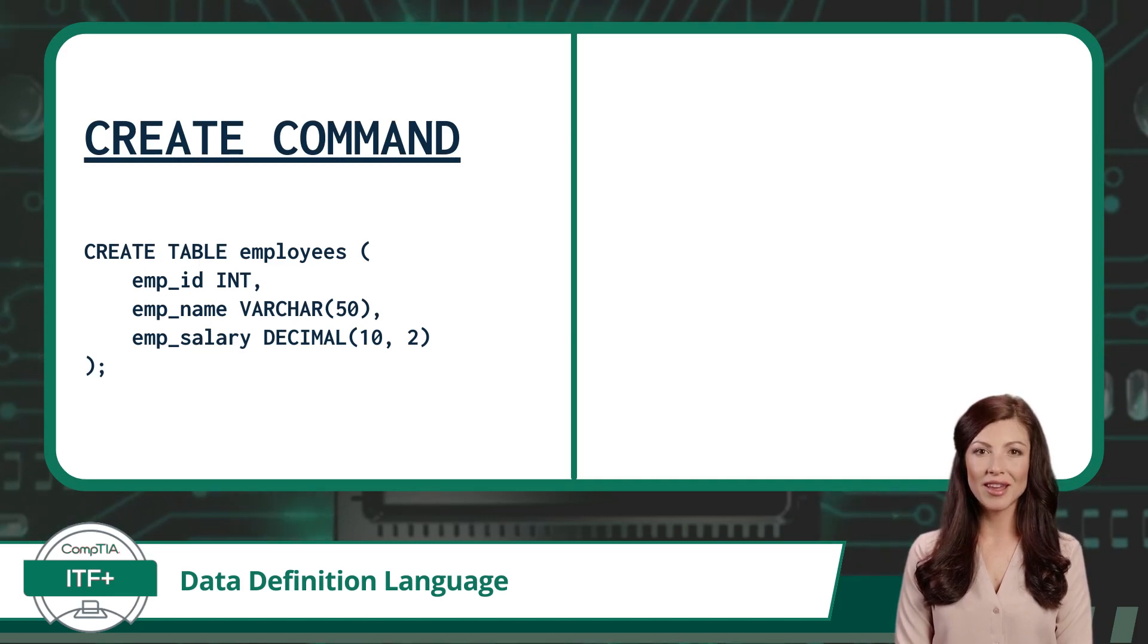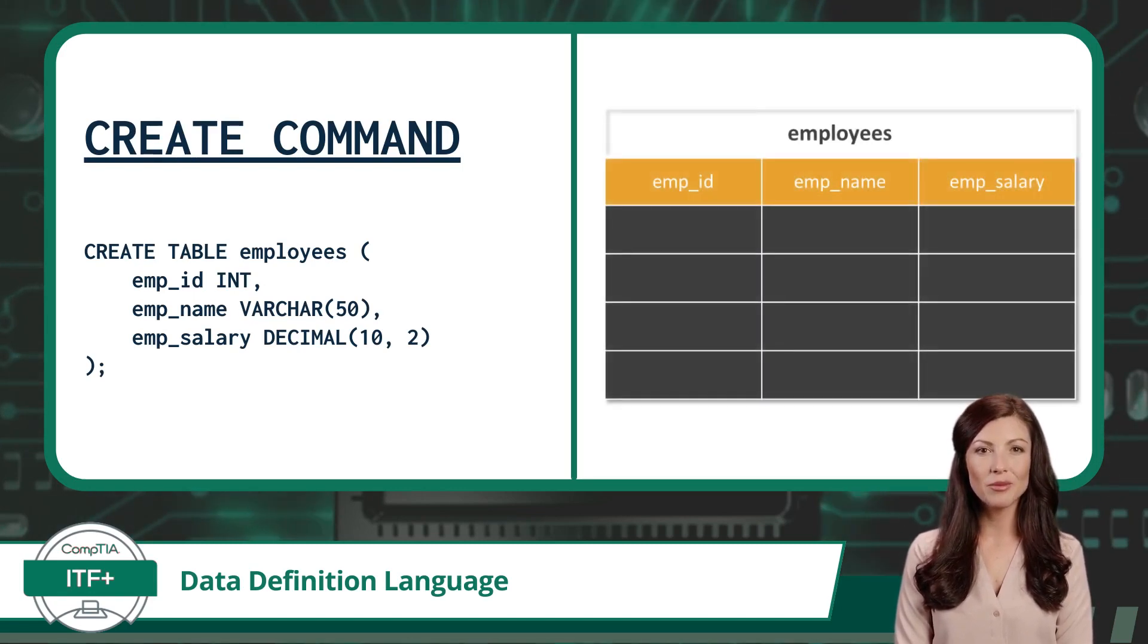I have a command on the left and the right will be our output. Currently the output shows nothing. Now we will run the command on the left. After running the command, this would be the result. Our CREATE command added a new table named Employees that has three columns.